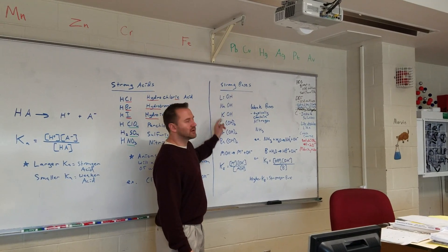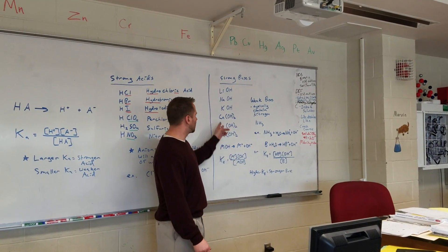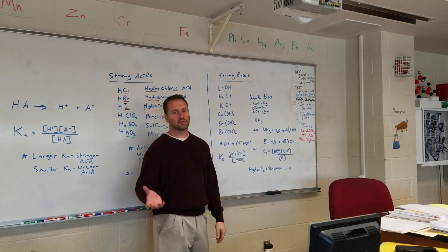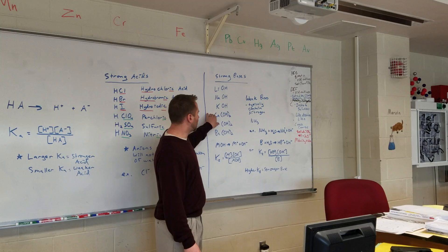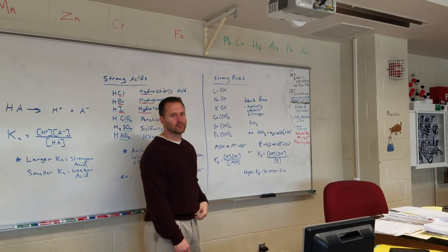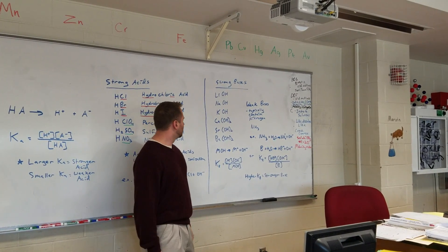These are all just alkaline metals combined with hydroxide ions, and these are alkaline earth metals combined with the hydroxide ions. Notice that it starts at calcium. Magnesium's not that strong, so anything calcium or below in the alkaline earth metals would be considered a strong base.